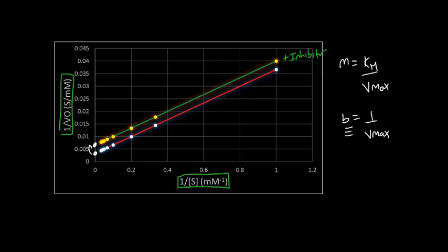So a larger value for the y-intercept corresponds to a smaller value for Vmax. So with the inhibitor, we have a smaller Vmax. And then that smaller Vmax then must mean that Km is smaller as well to keep the same slope.